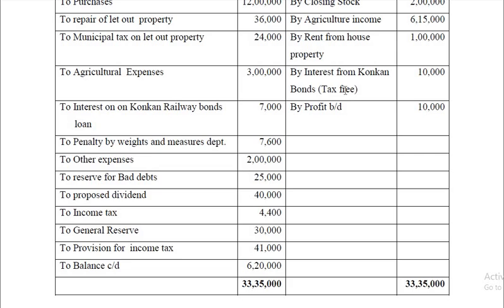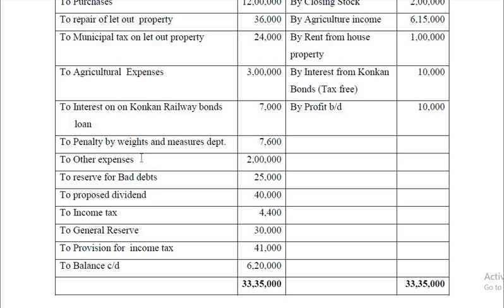Any penalty — such as penalty by way of weights from the reserve department — is not allowed and should be added back while computing business income. Regarding other expenses, the depreciation of 25,000 should be added back, and what is allowed under Section 32 of the Income Tax Act should be deducted later. Any reserve is not allowed — reserve for budgets, proposed dividend, income tax, transfer to general reserve, provision for income tax — these are all not allowed. While computing book profit, provision for income tax, income tax, proposed dividend, reserve for budgets, and depreciation of 25,000 should be added back and then deducted.